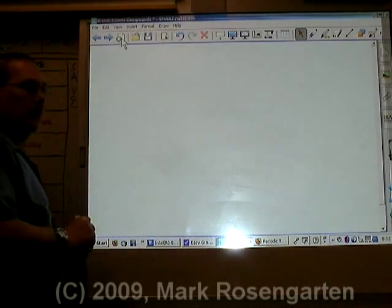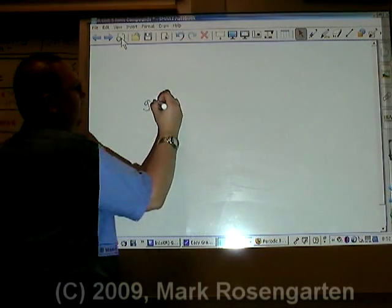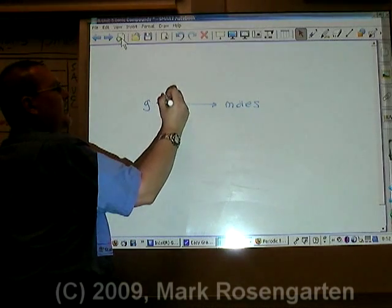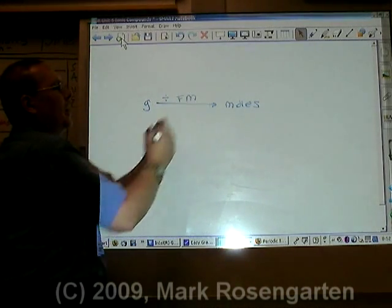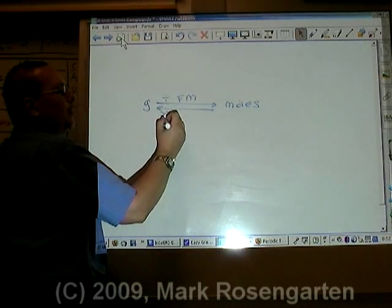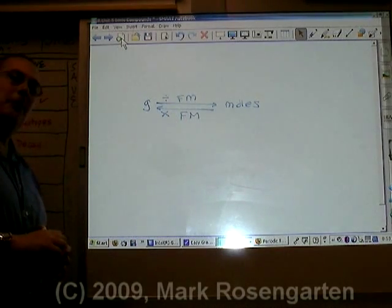So here's a little diagram you can use. If you're given grams and you want to get to moles, take your grams and divide by gram formula mass. If you're given moles and you want to get to grams, MOLTIPLY by gram formula mass, and you'll be able to solve your problem.